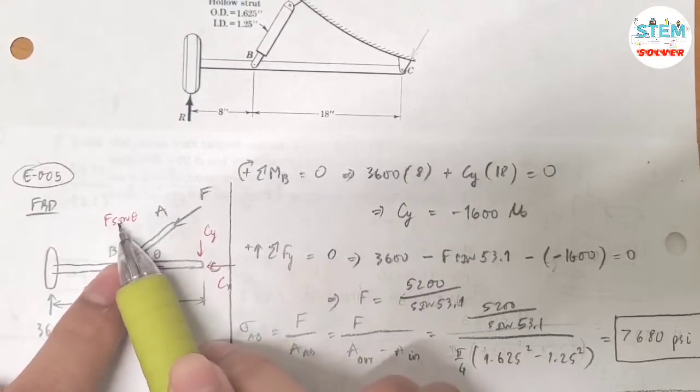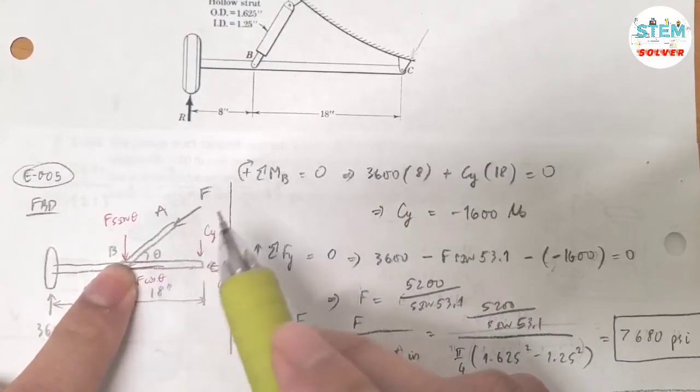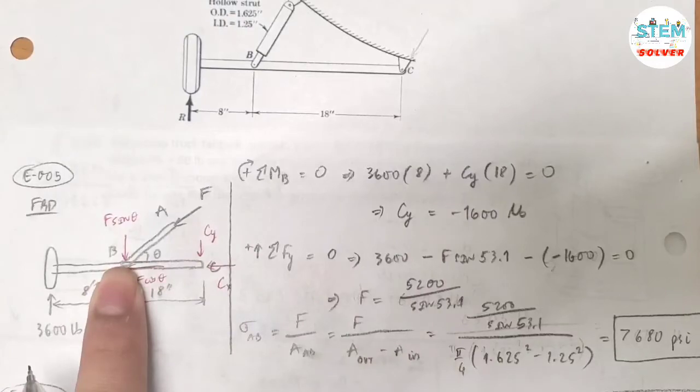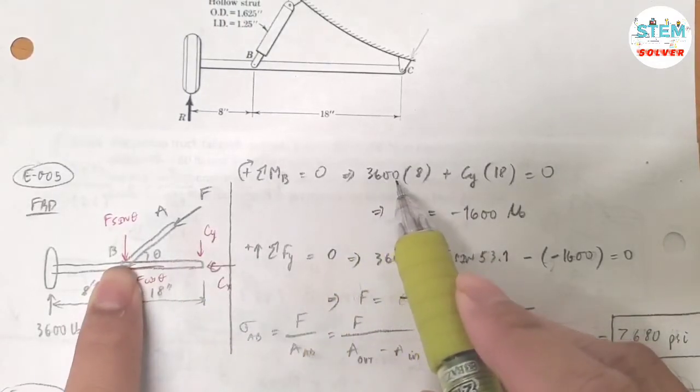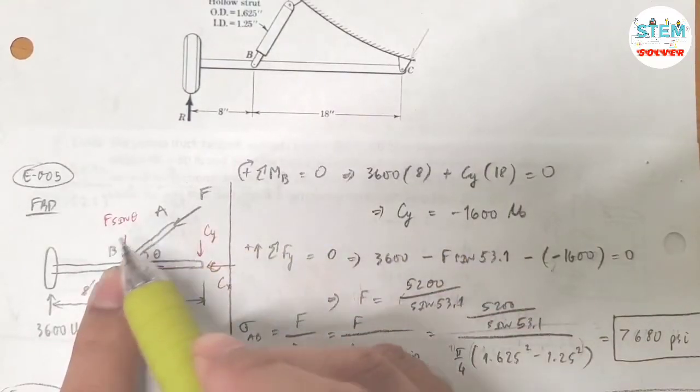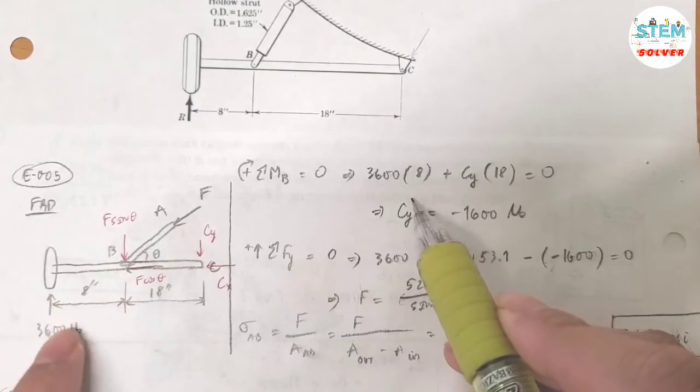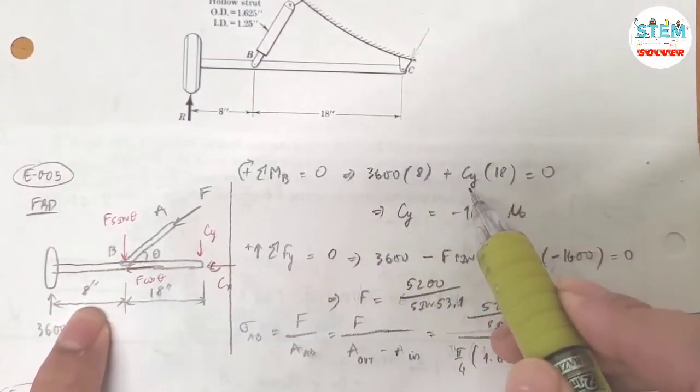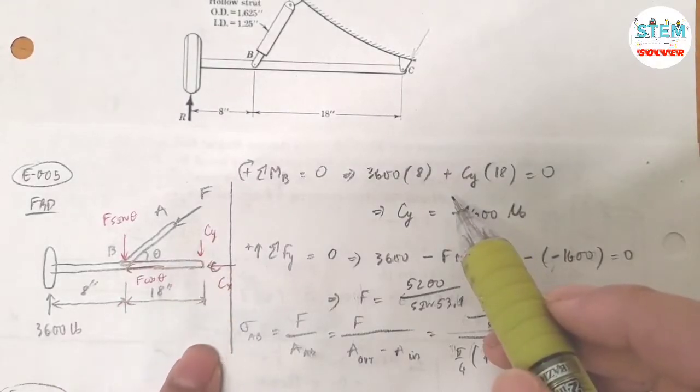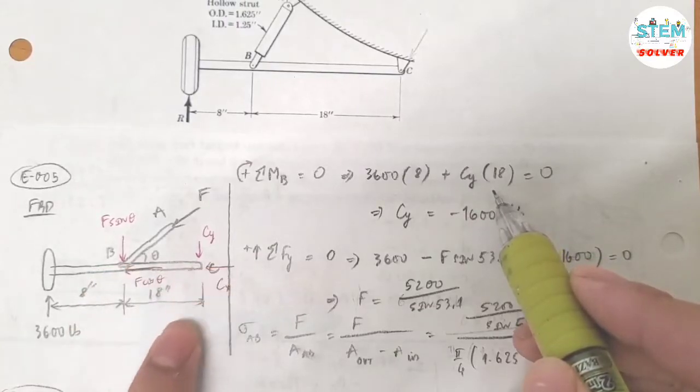So at B, it eliminates this force and this force because there's zero distance here. So I have only 36,000 pounds force and the Cy force. So I have 36,000... assuming clockwise is a positive direction, so I have 36,000 times 8. The distance between the wheel and B is 8 inches. Plus...